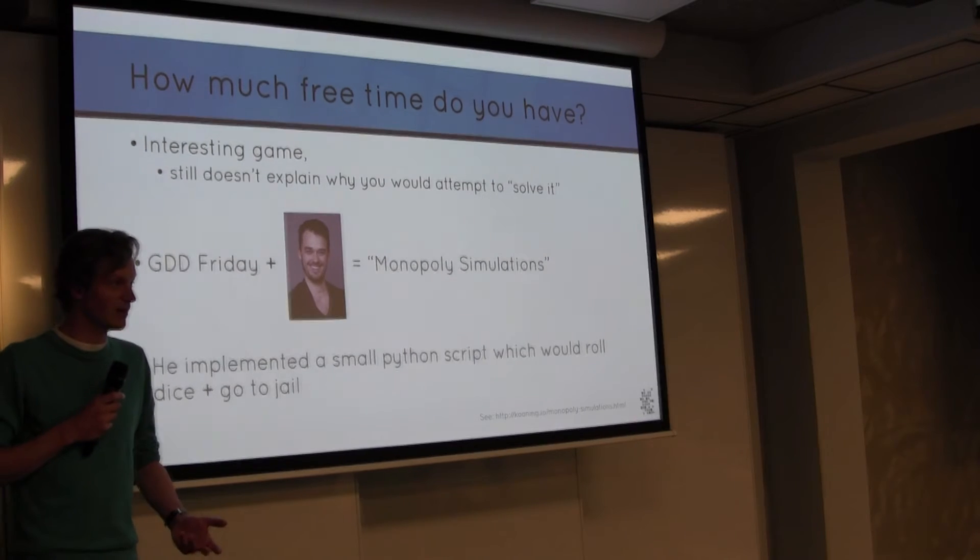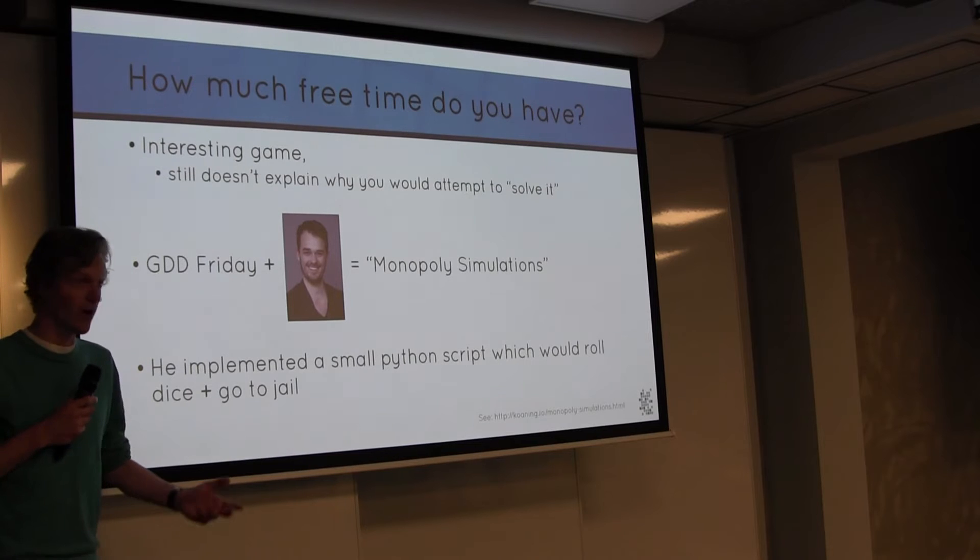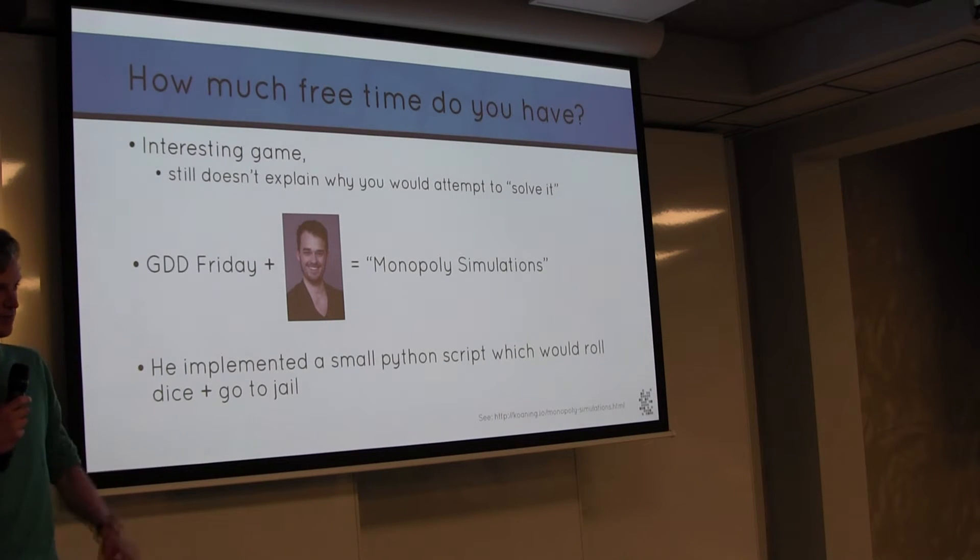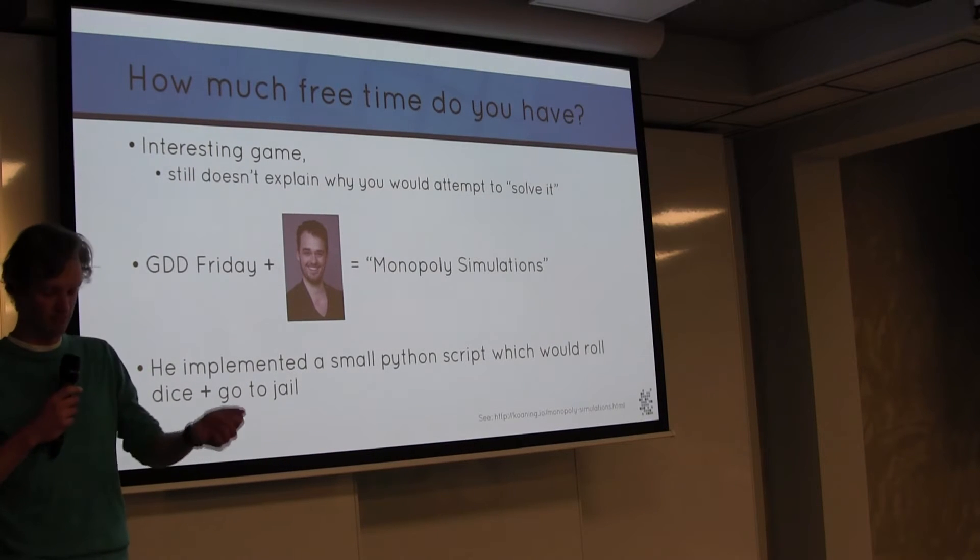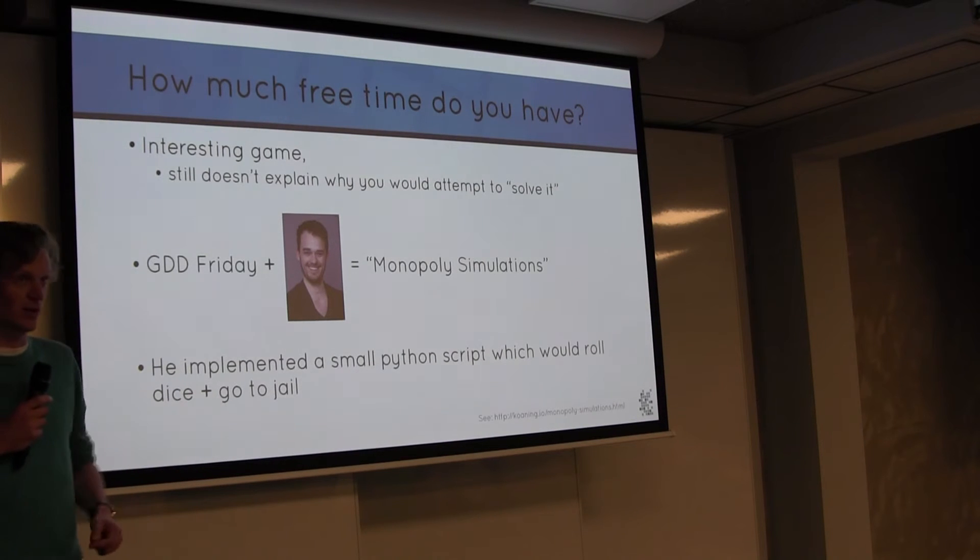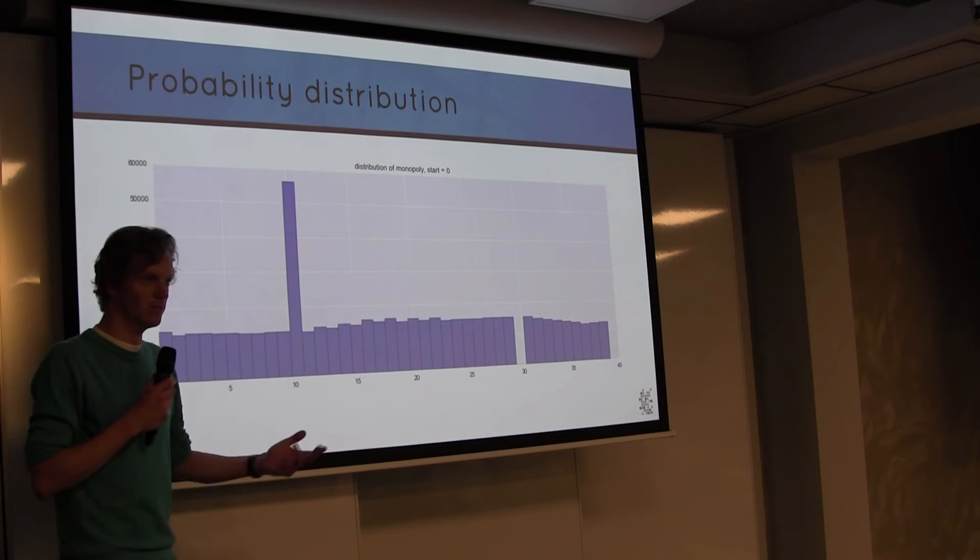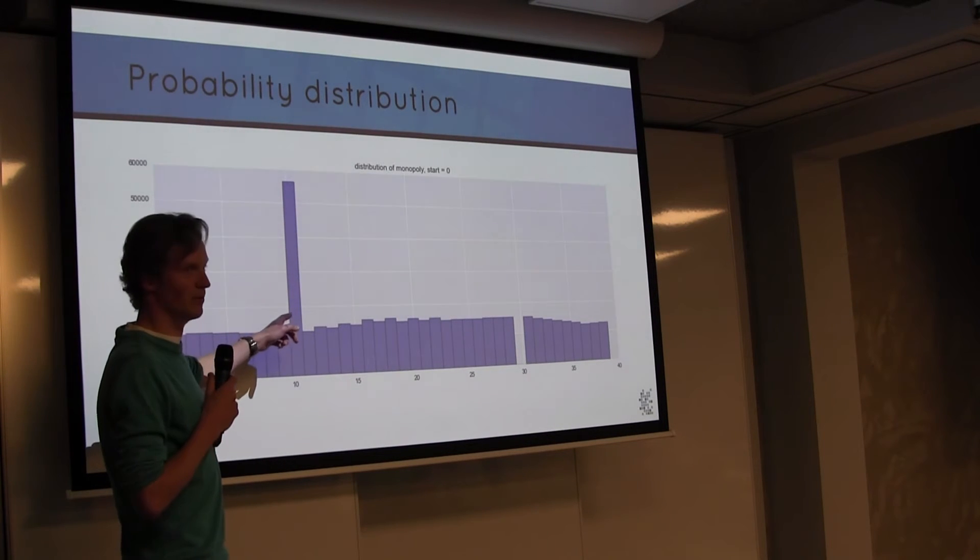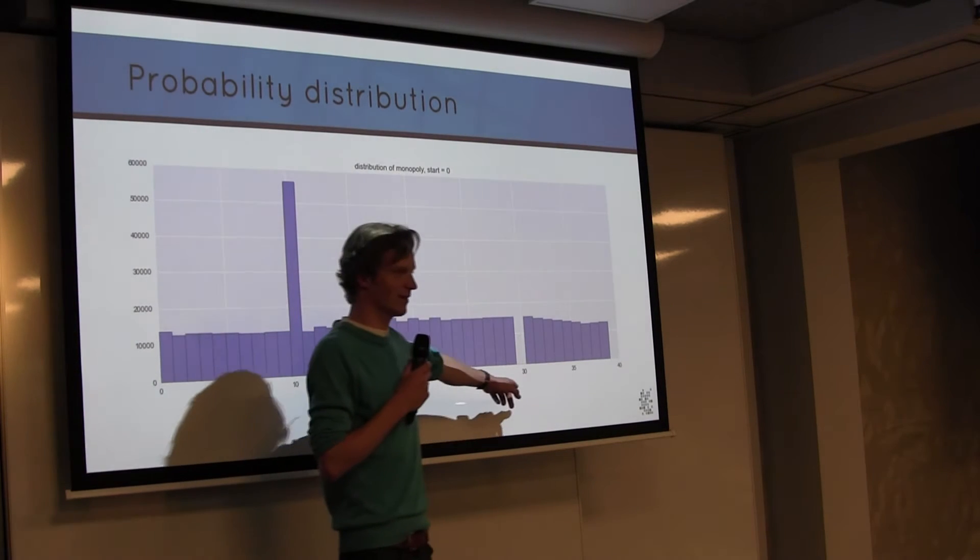At GoDaddy Driven we have this thing called GDD Fridays, which is once a month, basically a free day of work which you can spend on anything. This colleague of mine, Vincent, he's not in the room unfortunately, he made this Monopoly Simulations blog post during one of those. What he did is he implemented a small Python script which would roll dice and then go to jail if you land on the go to jail thing. What he created was this probability distribution: are some tiles in the board visited more often than others? One clearly pops up. It's the jail itself, because if you go there you stay there a lot. And the third is the go to jail tile. You don't actually land there. But what shows up is these spikes after the jail.